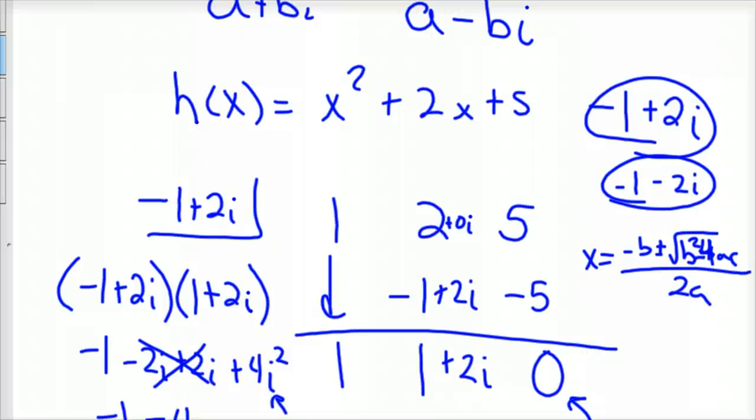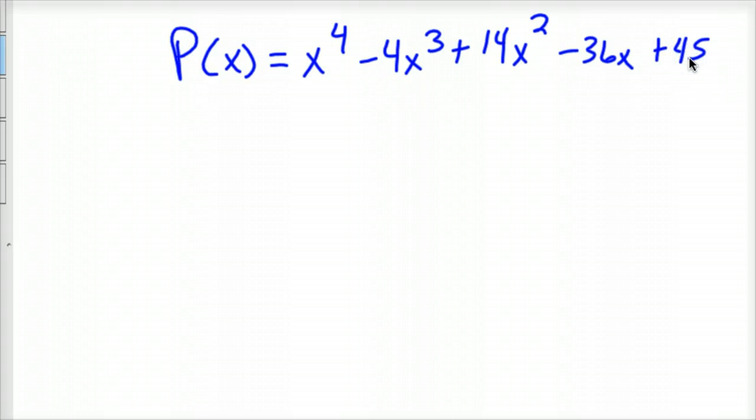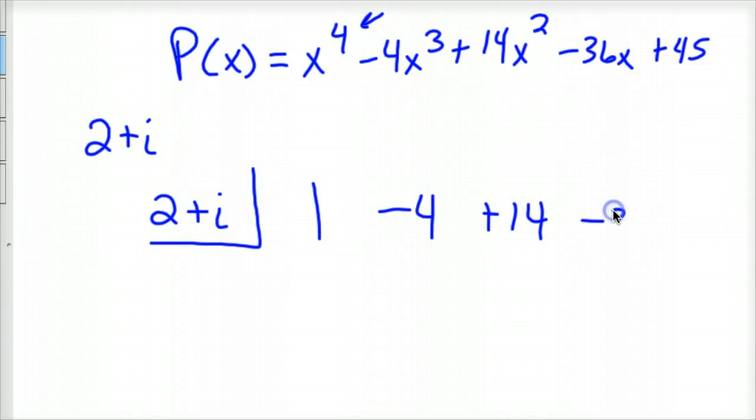But when you have something larger, maybe much larger, a 4th degree magnitude. So a 4th degree-er might look like this. Maybe your function is p of x equals x to the 4th minus 4x cubed plus 14x squared minus 36x plus 45. And we knew that 2 plus i is a root of that. We just know that.